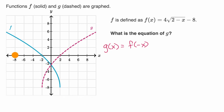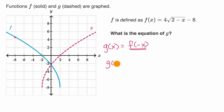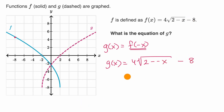How do we know that? Whenever we take f of x and get that value, g at the negative of that value takes on the same function value. We could pick the point negative eight: f of negative eight is equal to a little over four, and g of eight is equal to that same value. So what is the equation of g? We replace all of the x's with negative x: g of x is equal to four times the square root of two minus negative x, minus eight, which simplifies to four times the square root of two plus x, minus eight.